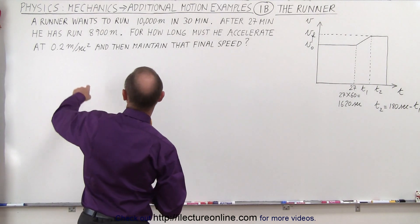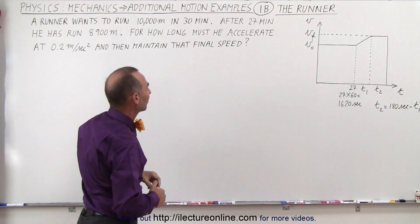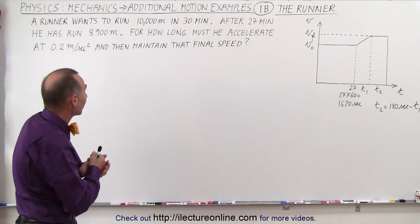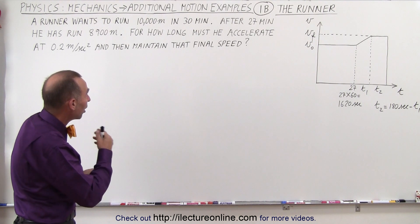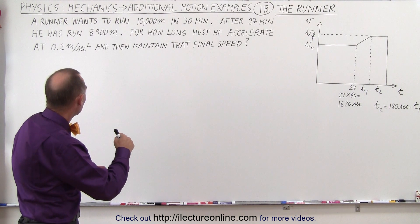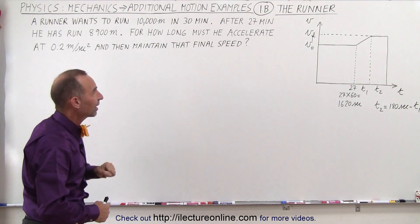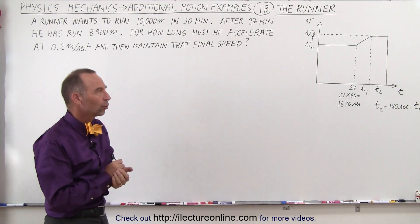He's only covered a distance of 8,900 meters after 27 minutes have elapsed, which means he only has three minutes left to cover 1,100 meters. So for how long must he accelerate to a new speed at 0.2 meters per second squared and then maintain that final speed in order to accomplish his goal.